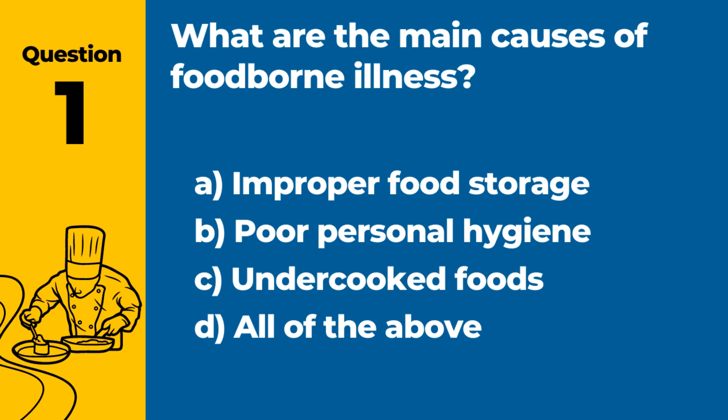Question 1. What are the main causes of foodborne illness? Answer: D. All of the above. Foodborne illnesses can result from various factors, including improper food storage, poor personal hygiene, and consuming undercooked foods, among others.